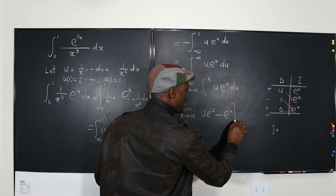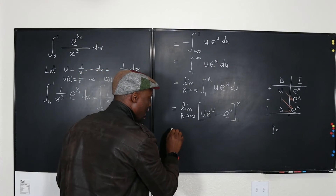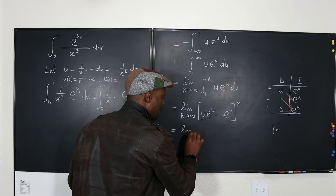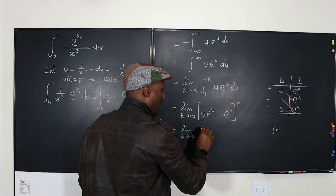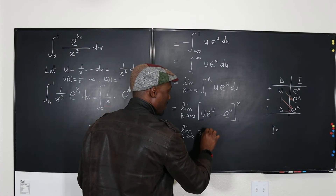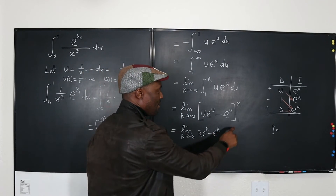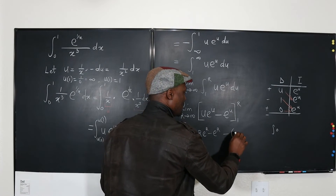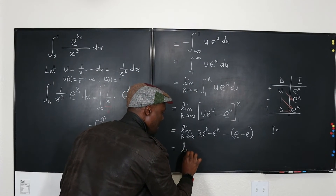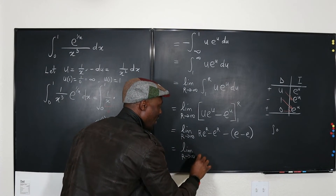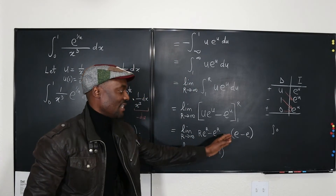This equals the limit as r goes to infinity of: plugging in r gives r e to the r minus e to the r, minus plugging in 1 gives 1 times e to the 1 minus e to the 1, which is e minus e, that's zero. So we have the limit as r goes to infinity of e to the r times (r minus 1).